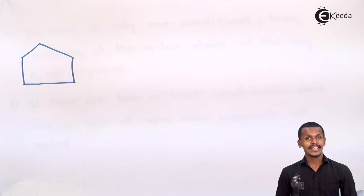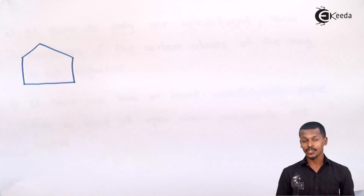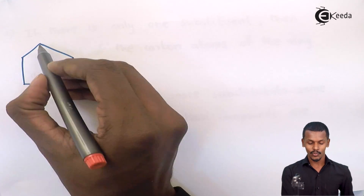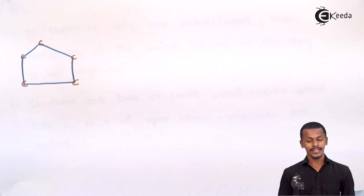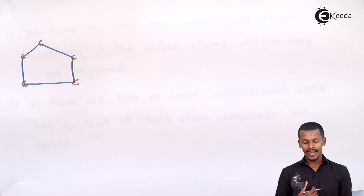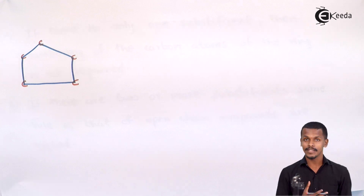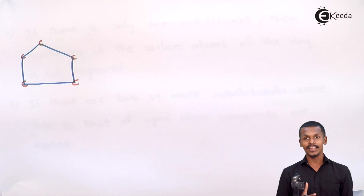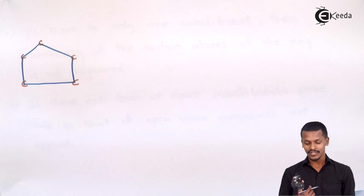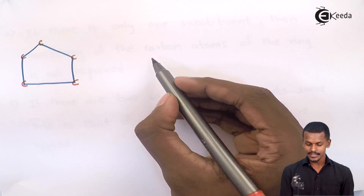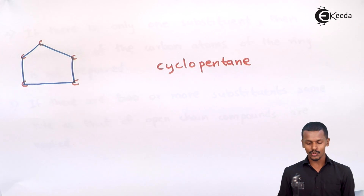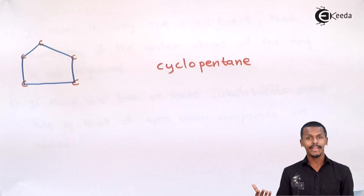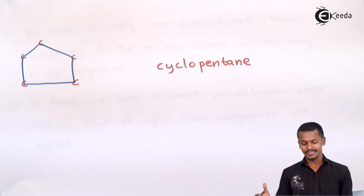Example 1: The structure shown has a total of 5 carbon atoms arranged in a ring — it is an alicyclic compound. As an open chain this would be called pentane, but since it is cyclic it is called cyclopentane. No functional group is attached, so this is a straightforward example.